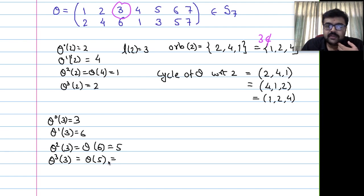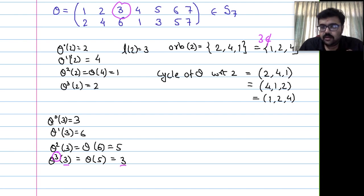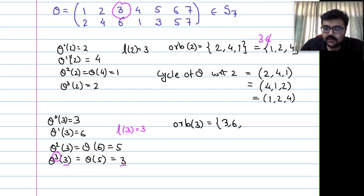Orbit of 3 = {3, 6, 5}. The cycle of theta with respect to 3 is (3, 6, 5): 3 goes to 6, 6 goes to 5, 5 goes back to 3. We can also write it starting from 6 as (6, 5, 3), or from 5 as (5, 3, 6). These are 3 ways to write the same cycle — in cyclic order, we cannot reverse.